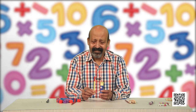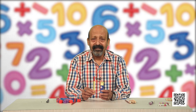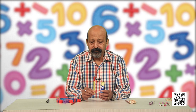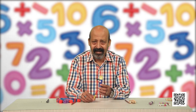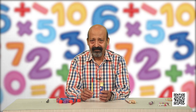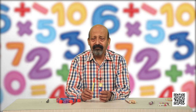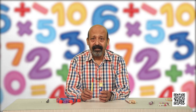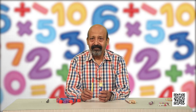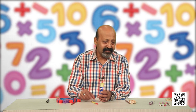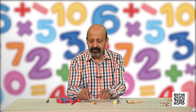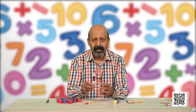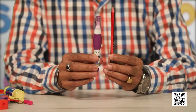Let us see — I have this stick and this marker with me. Can we say which one is thicker and which is thinner? We use thicker and thinner to compare these. This one is thicker and this is thinner. We use these words in our daily life. Let us see a few more objects in which we can say which is thicker and which is thinner.